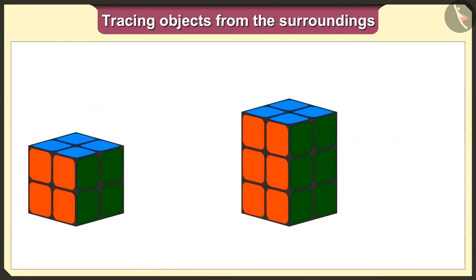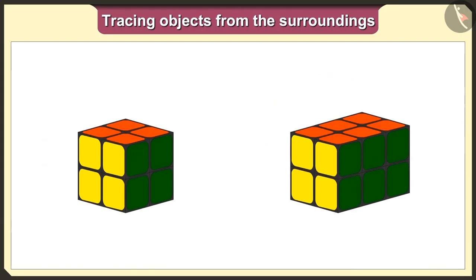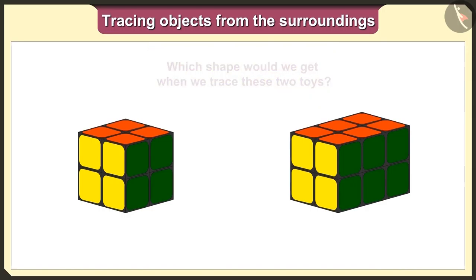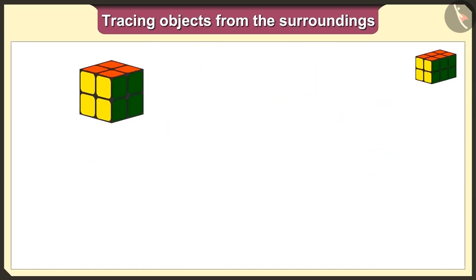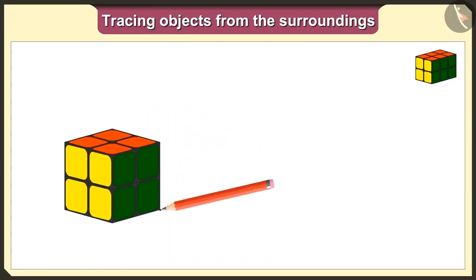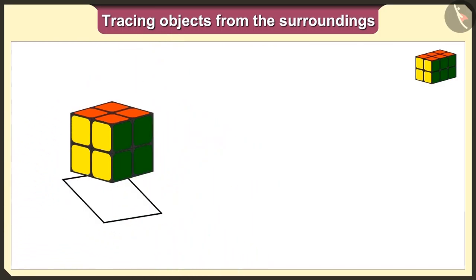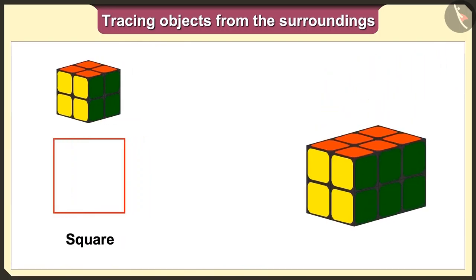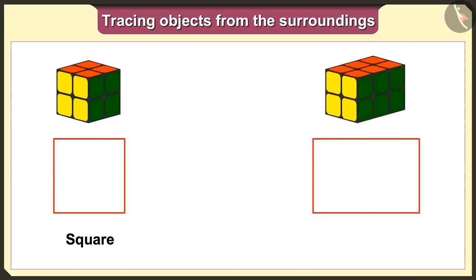Let's now change their base and keep both the toys in a different position. Now tell me, which shape would we get when we trace these two toys? If we keep this cube toy on paper and trace it, then we will get the square shape like this. And if we keep this cuboid toy on paper and trace it, then we will get a big square shape like this.